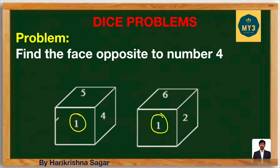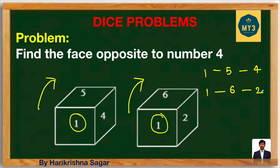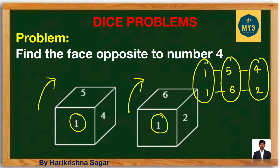The orientation method works like this: whatever the common number is, look at the numbers that come after it in each die. Here, after one in dice one: five, then four. After one in dice two: six, then two. From this, four opposite is two, five opposite is six, and one opposite is three (the remaining number not listed). The question asks what is opposite to four — the answer is two.